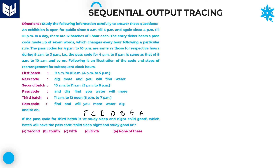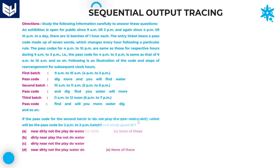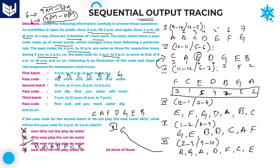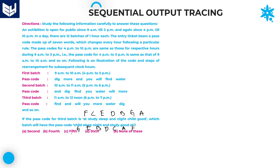Reading the given code: child = G (starting with G), sleep = E, night = B, end = D, study = C, good = A, at = F. So the code is G, E, B, D, C, A, F. Checking our batch table, this matches batch number 5. Option C is the right answer.